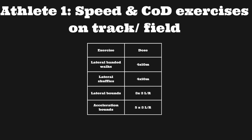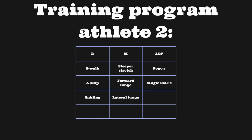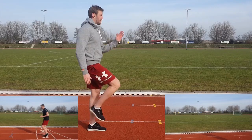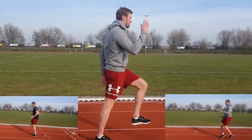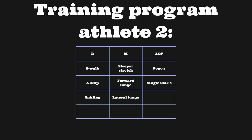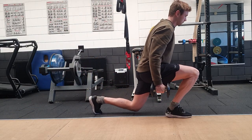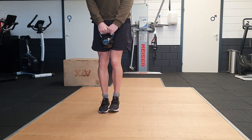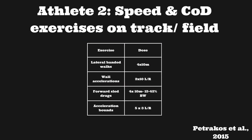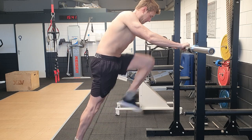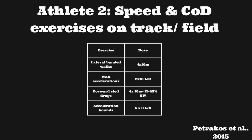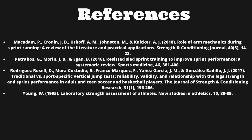Now we look at Athlete 2's ramp warmup and training. The ramp warmup looks pretty similar — A-Walks, A-Skips, and ankling for the same reasons as Athlete 1. We also perform the sleeper stretch for the shoulder to mobilize internal rotation, and the forward and lateral lunge for the same reasons as Athlete 1. We also do pogos and the single counter-movement jump. The exercises for Athlete 2 are more focused on linear acceleration: lateral banded walks because of his problem during the T-test, wall accelerations to reinforce the 45-degree angle, the same goes for using the sled. The bounce drill teaches him how to separate the arms, knee drive, and keep the ankle dorsiflexed.